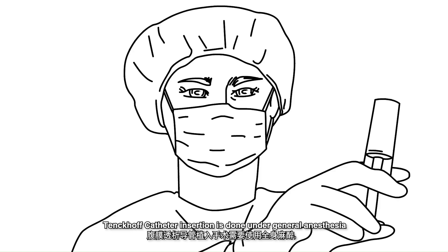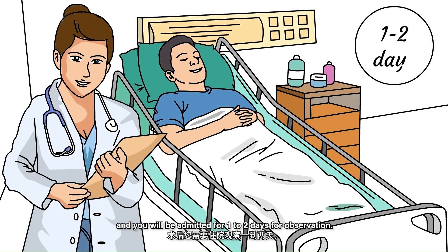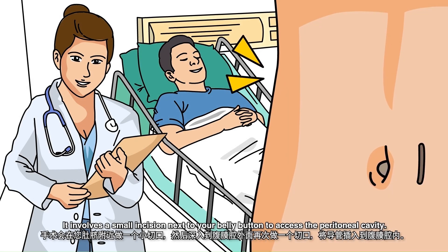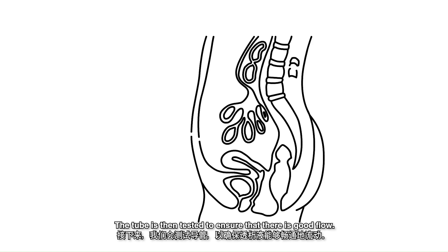Tenckhoff catheter insertion is done under general anesthesia and you will be admitted for one to two days for observation. It involves a small incision next to your belly button to access the peritoneal cavity. The tube is then tested to ensure that there is good flow.